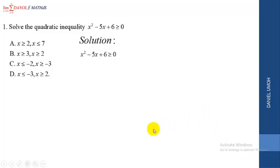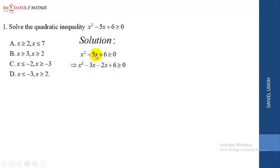According to the rule of quadratic equations, we look for two numbers that when multiplied give us plus 6, and when added give us minus 5. Those numbers are minus 3 and minus 2, because minus 3 times minus 2 is 6, and minus 3 plus minus 2 is minus 5. So this implies x squared minus 3x minus 2x plus 6 is greater or equal to 0. The minus 3x minus 2x is what gives us minus 5x — we simply split it.